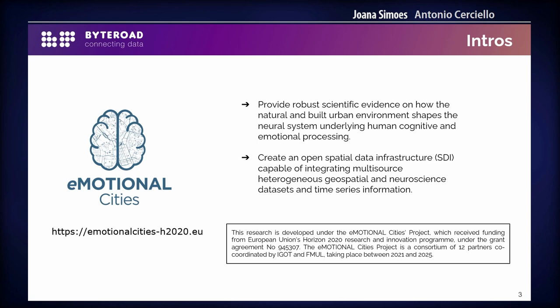And then we have neuroscience data. This is perhaps a bit more new for us because it's not data that is traditionally used in the geospatial domain. It's data that has perhaps not much diversity in terms of geospatial attributes, but it has a huge diversity in terms of timestamps — it's very dense in the time dimension. The idea is to collate all these datasets by creating a spatial data infrastructure, which needs to be able to deal with these sometimes large-volume datasets. At the same time, they are very heterogeneous, both geospatial and temporal — so time-series data.